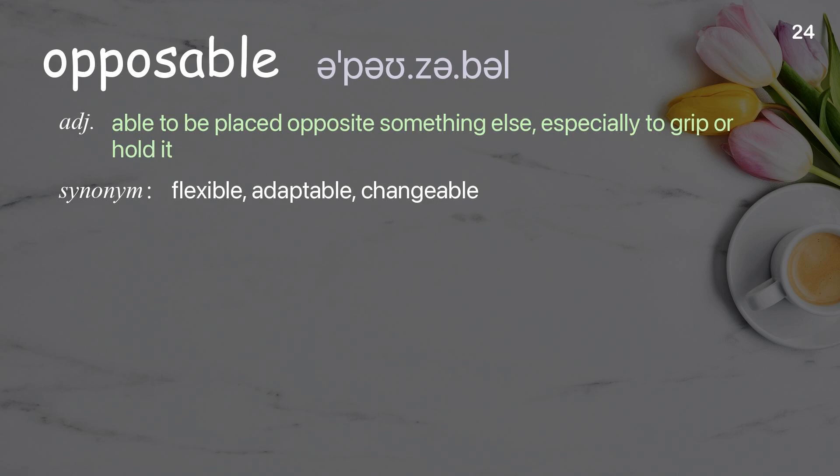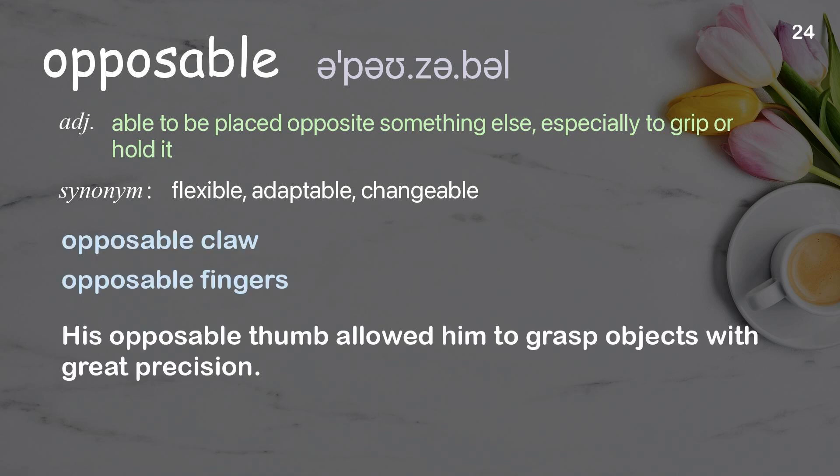Opposable: able to be placed opposite something else, especially to grip or hold it. Examples: opposable claw, opposable fingers. His opposable thumb allowed him to grasp objects with great precision.